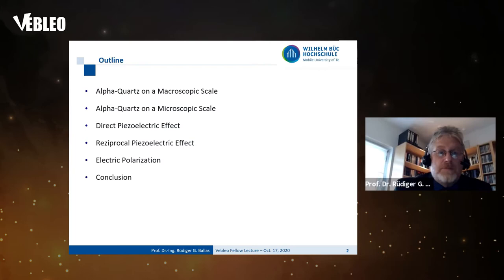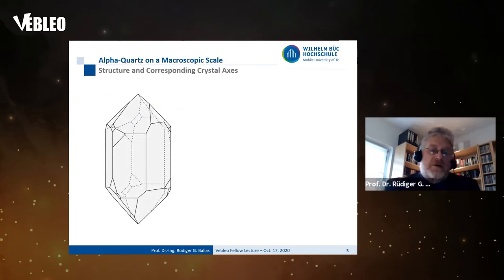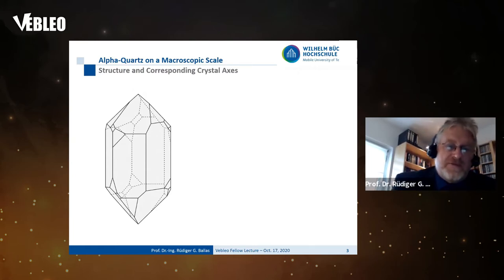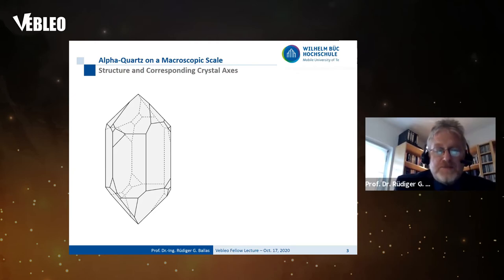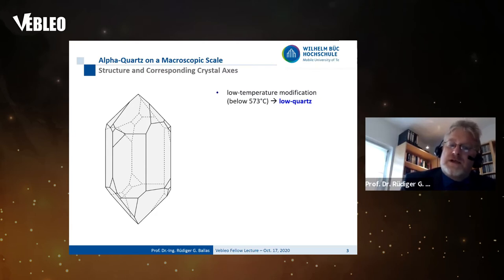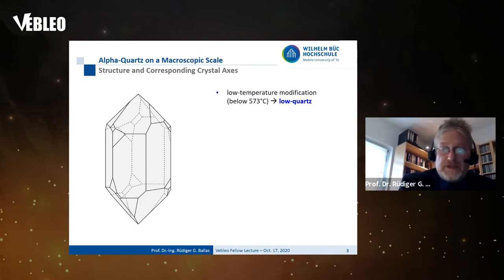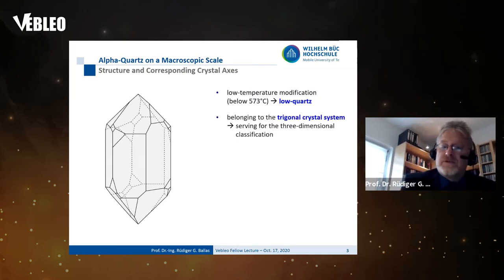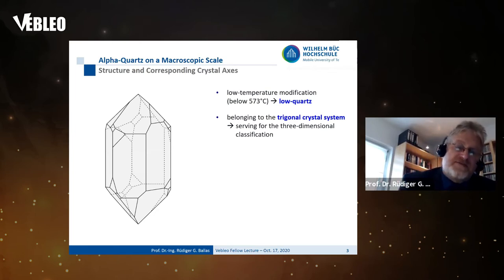Let me start with the alpha quartz as shown on the left side of the slide. You see a crystal structure that can be found in nature, but it can also be grown in hydrothermal crystal autoclaves. We call it the low temperature modification, also known as low quartz. Low quartz equals alpha quartz, meaning we have a special crystal structure below 573 degrees, which represents the transition temperature of this material. The alpha quartz belongs to the trigonal crystal system, used for the three-dimensional classification of crystals.